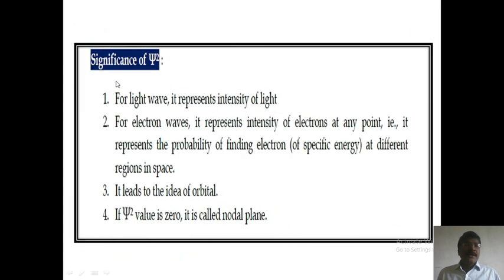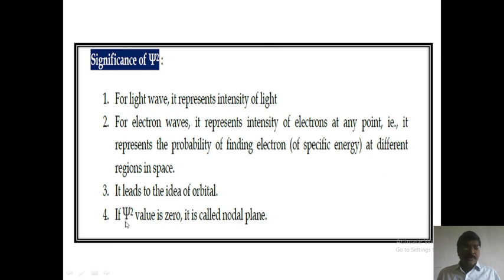The significances of ψ² are: first, for light waves it represents the intensity of light; second, for electron waves it represents the intensity of electrons at any point, that is, the probability of finding an electron at different regions in space; third, it leads to the idea of an orbital; fourth, if the ψ² value is zero, it is called a nodal plane.